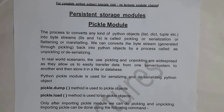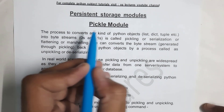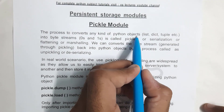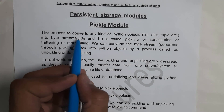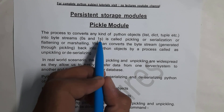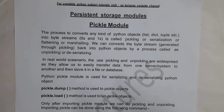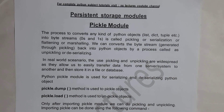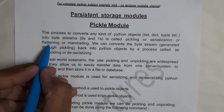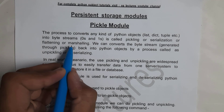The process of converting any kind of objects — like dictionaries, tuples, lists, and so on — into byte streams, that is in the form of zeros and ones, is called pickling. Pickling is the process of converting Python objects like list, tuples, set, dictionaries into binary format. We can also call this pickling as serialization, or flattening, or marshaling.